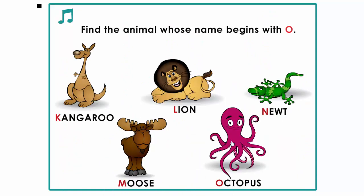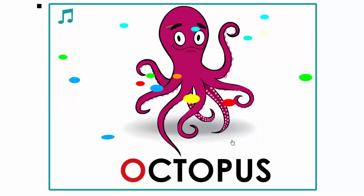Find the animal whose name begins with O. Fabulous! Octopus begins with O.